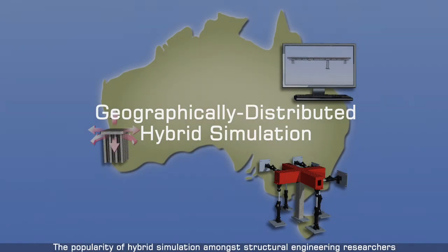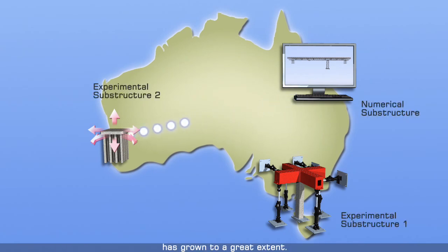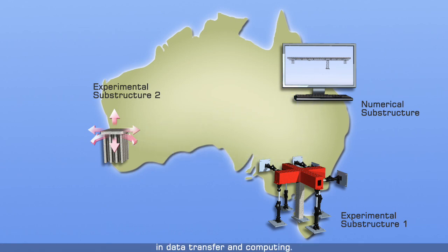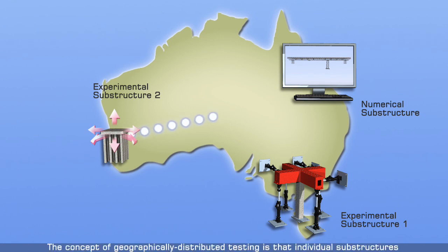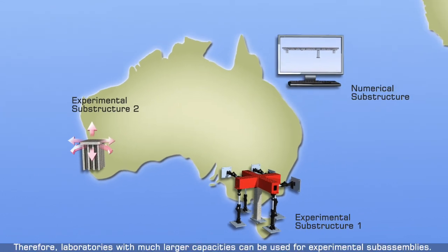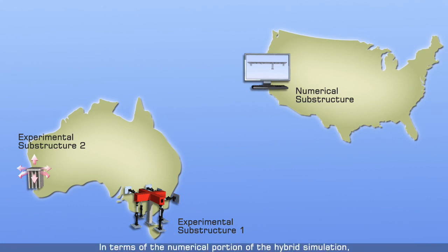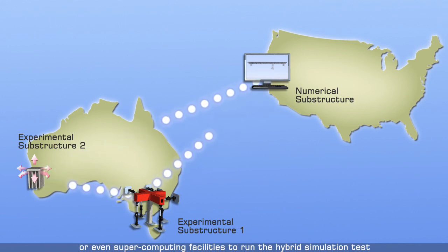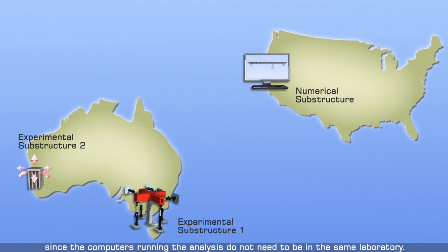The popularity of hybrid simulation among structural engineering researchers has grown to a great extent. Geographically distributed testing is one recent concept that has been developed from the use of substructuring techniques and benefited from technological advances in data transfer and computing. The concept is that individual substructures do not need to be within the same facility, but can be linked by either the internet or other methods of data transfer. Therefore, laboratories with much larger capacities can be used for experimental sub-assemblies, and more powerful computers or even supercomputing facilities can run the hybrid simulation test, since the computers running the analysis do not need to be in the same laboratory.